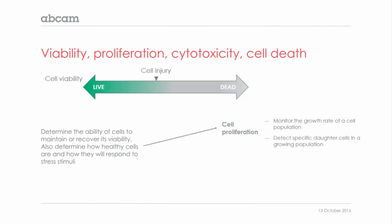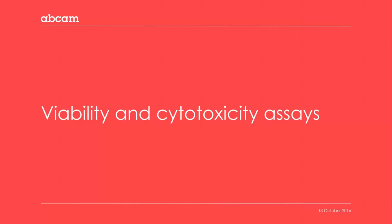Cell proliferation assays are used to monitor the growth rate of a population or to detect specific daughter cells in a growing population. Cytotoxicity assays are used to determine the number of live and dead cells in a population after treatment. These definitions are not mutually exclusive and usually interchangeable, and you will see that sometimes the same assay is used to study both proliferation and cytotoxicity. For clarity, we will refer to viability and cytotoxicity assays simply as viability assays.